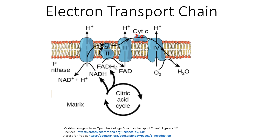Now cytochrome C will go to the fourth and final complex of the electron transport chain, and what will happen is the fourth complex will oxidize cytochrome C, meaning the two electrons will be lost from cytochrome C and gained by complex four.